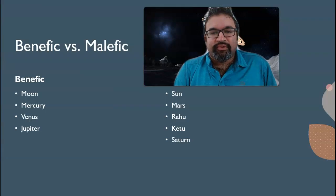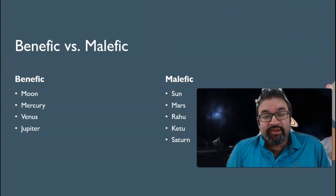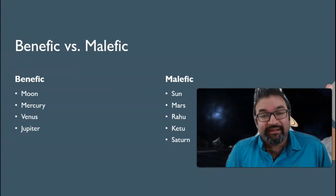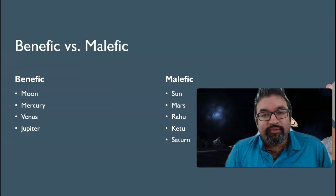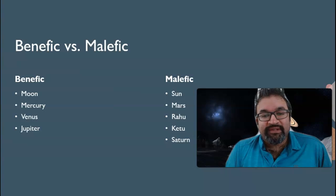The first fundamental tenet of Vedic Astrology is whether a planet is a benefic or a malefic. The benefics are Moon, Mercury, Jupiter, and Venus. The malefics are Sun, Mars, Rahu, Ketu, and Saturn. Easy to remember: four benefics and five malefics. Within a house, for instance the 10th house, if there is a malefic present, then there are going to be hardships that may be accentuated when Jupiter is transiting there. Rahu, for instance, is a malefic.